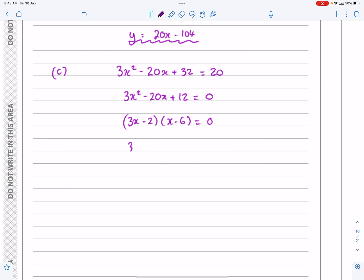Once we've got that, that's going to give me (3x - 2) equals 0 or (x - 6) equals 0. This is going to give me x equals 2/3, and this is going to give me x equals 6.